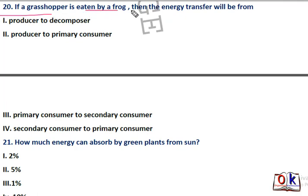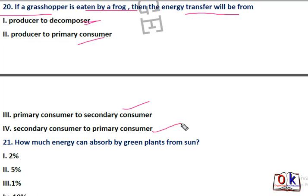Question number 20: if a grasshopper is eaten by a frog, the energy transfer will be from? Options are producer to decomposer, producer to primary consumer, primary consumer to secondary consumer, or secondary consumer to primary consumer. Grasshopper is a primary consumer, and frog will be the secondary consumer. Third option — primary consumer to secondary consumer — will be the answer.